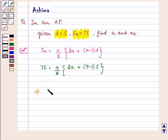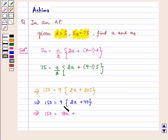Taking 2 on right hand side, so we get 150 is equal to 9 multiplied by 2A plus 9 minus 1 is 8, 8 multiplied by 5. This implies 150 is equal to 9 multiplied by 2A is 18A plus 9 multiplied by 40 is 360.